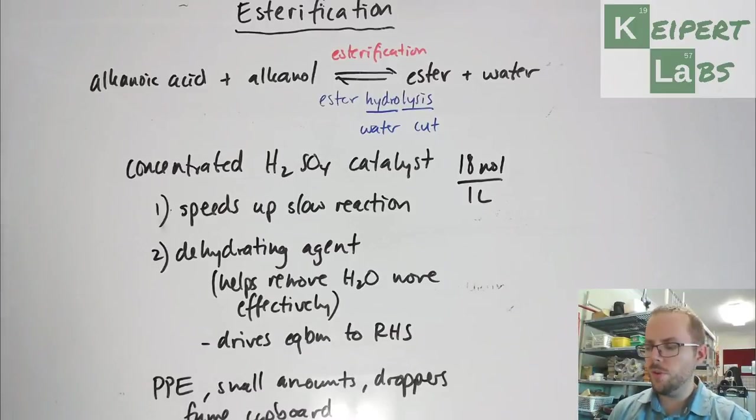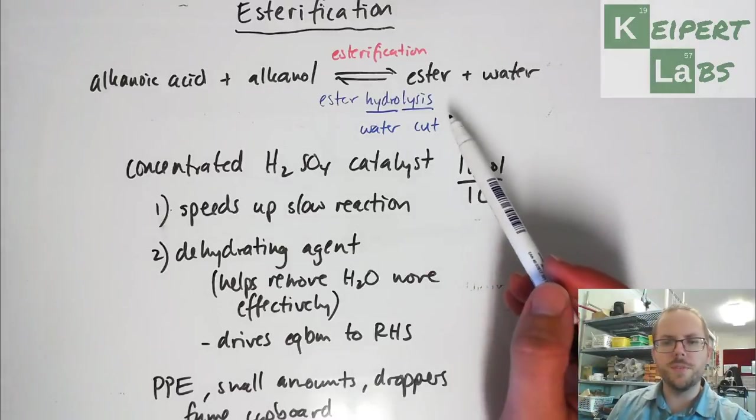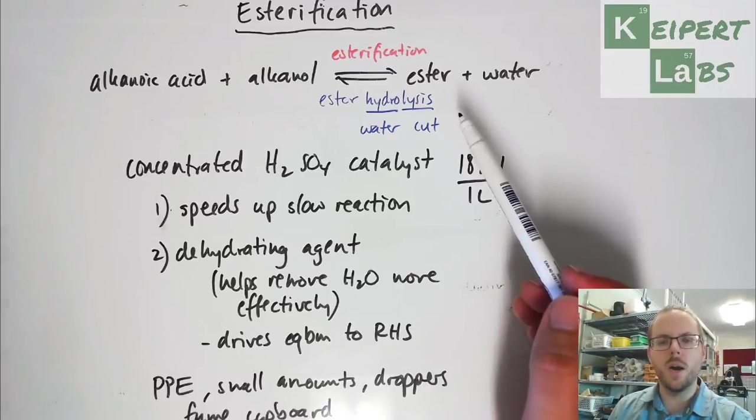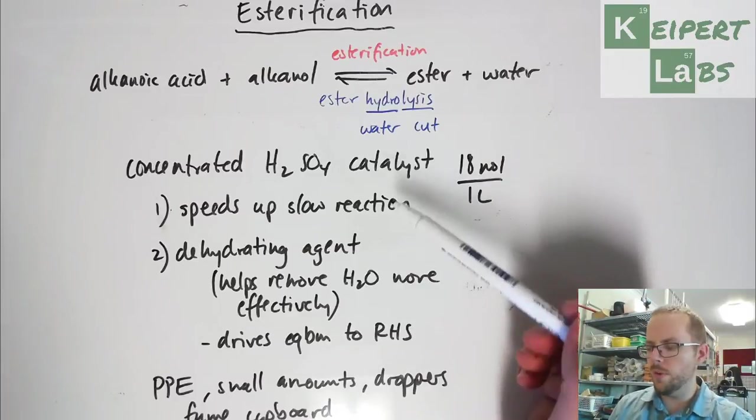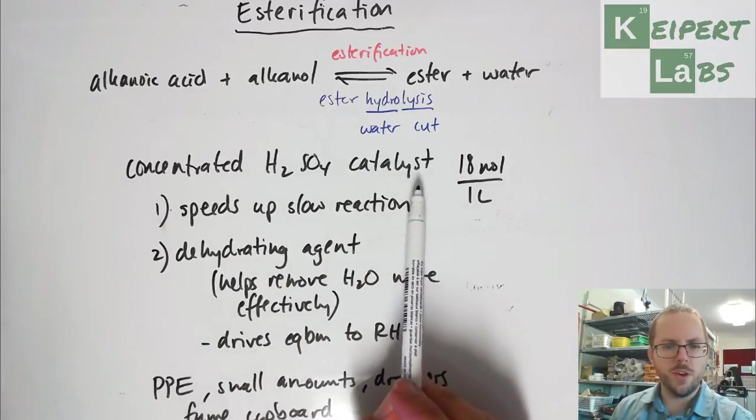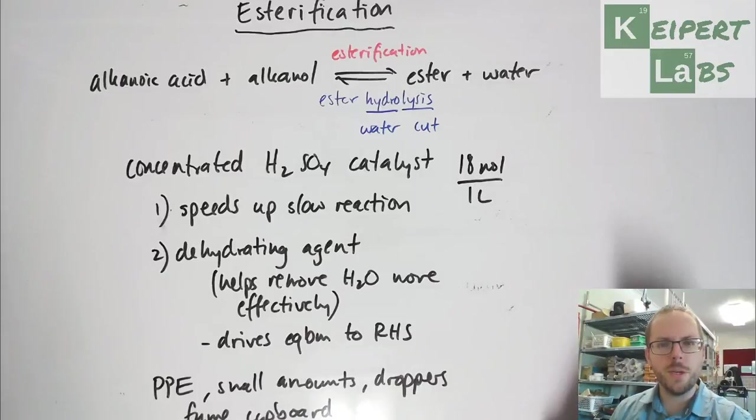All right. So in this video, so we've talked through the chemistry of the esterification reaction. We've gone through the different equipment that we use looking at refluxing and why, so what the pieces are and why we do it from a chemical point of view. We've also talked about why we use a concentrated sulfuric acid catalyst, and the reasons why for that, as well as then some of the safety precautions we need to take. All right. Thanks very much for watching. Bye for now.